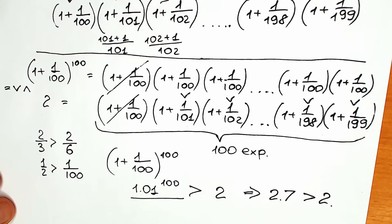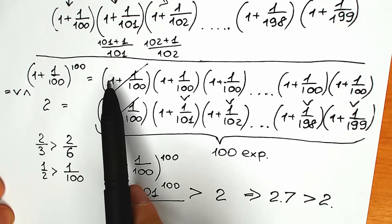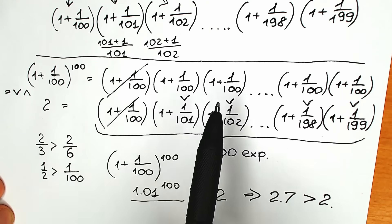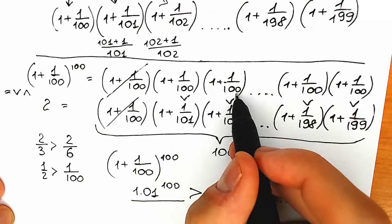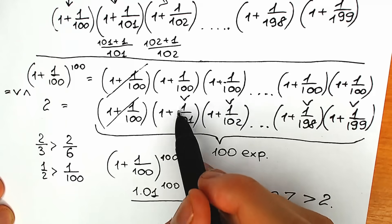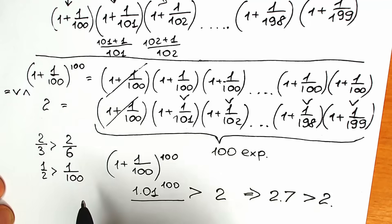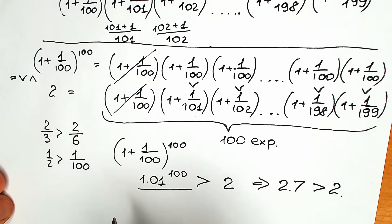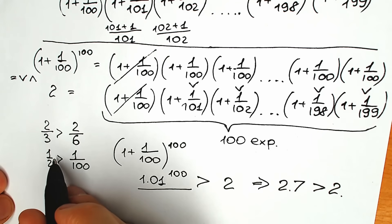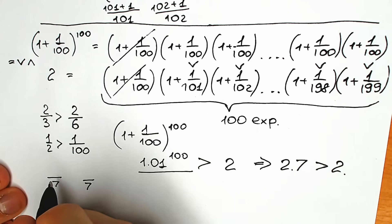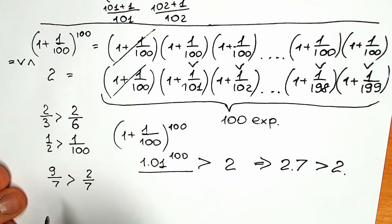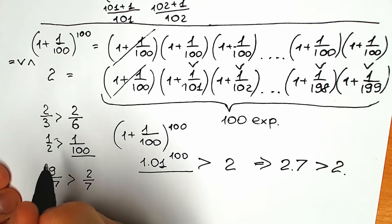So that was my solution. The key moment is to see that we have absolutely the same number of expressions — 100 on top and 100 on the bottom. The main insight is that a bigger denominator means a lower fraction. So 1/2 is greater than 1/100. But with numerators, a bigger numerator means a bigger fraction — for example, 9/7 is greater than 2/7. That's how the comparison works.